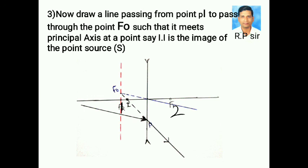draw a line from F0 to P dash. Here, this line intersects the principal axis at I. Now, this I is the image of the object and this line can be considered as refractory. Thank you.